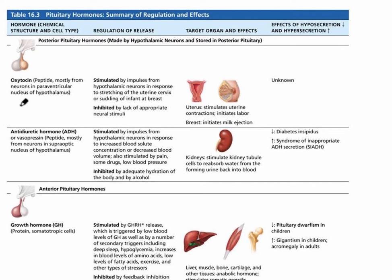The first posterior pituitary hormone is oxytocin. It is stimulated by impulses from the hypothalamic neurons, by stretching of the uterine cervix, or suckling of the infant at the breast. Weak uterine contractions during prolonged labor could result from insufficient oxytocin production — this is an example where the mom would be induced with pitocin, which is very similar to oxytocin. The target organs for oxytocin are the uterus and the breast.